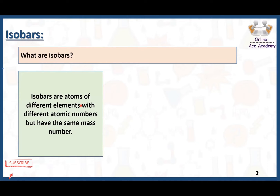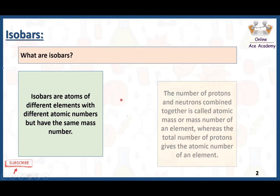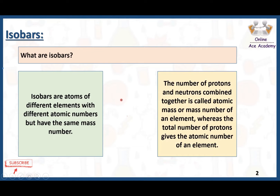Now we are talking about mass number and atomic number. The number of protons and neutrons combined together is called mass number. On the other hand, the total number of protons in an atom is called atomic number.